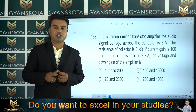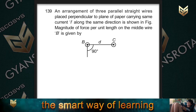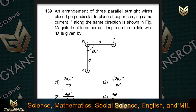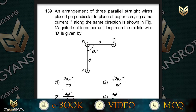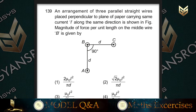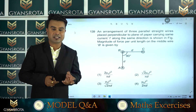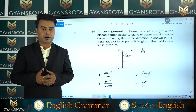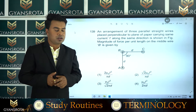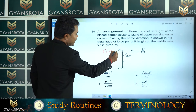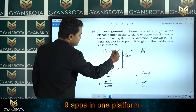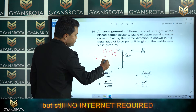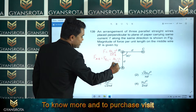Question number 139: An arrangement of three parallel straight wires placed perpendicular to the plane of paper carries the same current I in the same direction as shown in the figure. Find the magnitude of force per unit length on the middle wire B. The force acting on a conductor is F = μ₀I²/2πd. The force F_AB equals F_BC equals μ₀I²/2πd, but the angle between them is 90 degrees.